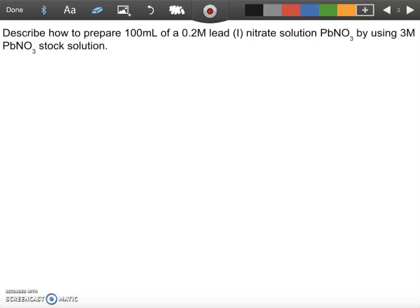So here's how the problem goes. Describe how to prepare 100 milliliters of 0.2 molar lead 1 nitrate solution by using a 3 molar lead 1 nitrate stock solution.